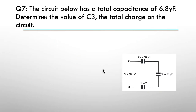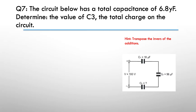Question seven: the circuit below has a total capacitance of 6.8 microfarads — determine the value of C3 and the total charge on the circuit. This one is a bit more challenging. Hint: transpose the inverse addition formula. The formula says 1/TC equals 1/C1 plus 1/C2 plus 1/C3 — you're going to have to transpose that.